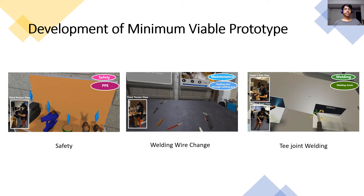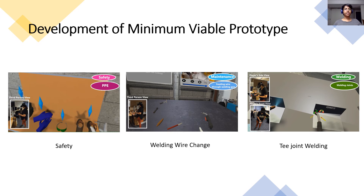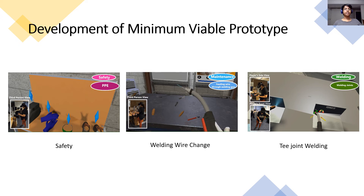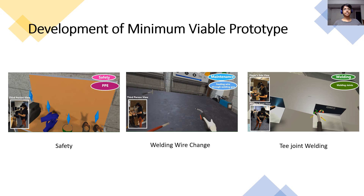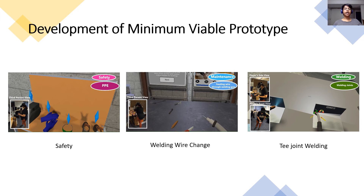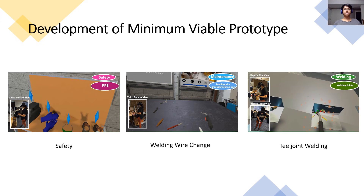In order to evaluate the accessibility, effectiveness, and engagement of the system, three lessons were selected to develop a minimum viable prototype for the user study. First, safety PPE was introduced to acclimate the user to the scene and implement an interactive comprehension test. Second, the wire change lesson was implemented to provide detailed information about the correct steps and sequence needed to perform a wire change in a welding machine with guided activities and interactive video tutorials. Third, in the weld joint exercise, using the feedback system, users can virtually weld a T-joint in a horizontal position using a real welding gun.